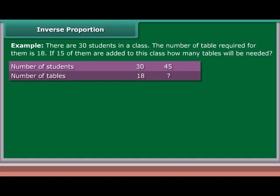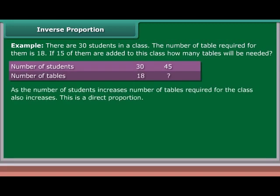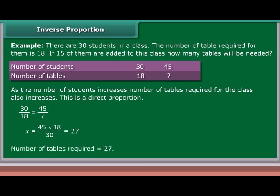Example: There are 30 students in a class and the number of tables required for them is 18. If 15 more students are added to this class, how many tables will be needed? As the number of students increases, the number of tables required also increases — this is a direct proportion. 30/18 = 45/X, so X = (45 × 18)/30 = 27. Number of tables required is 27.